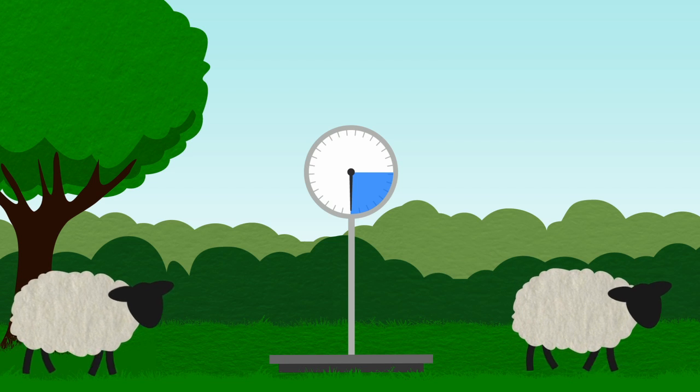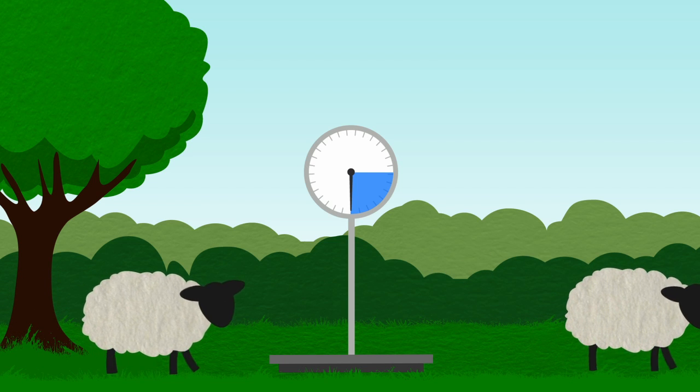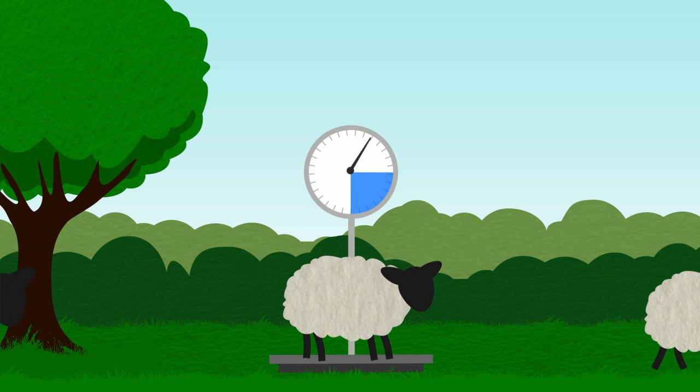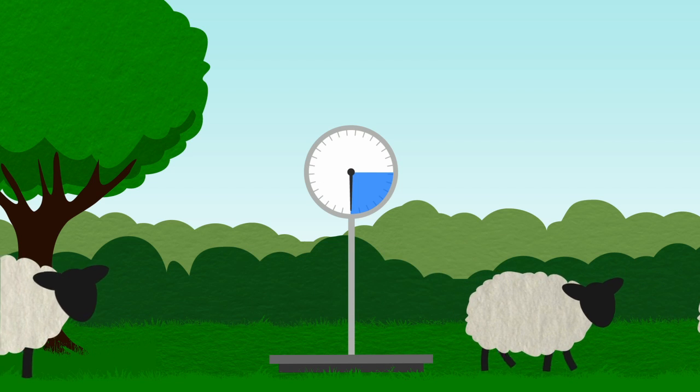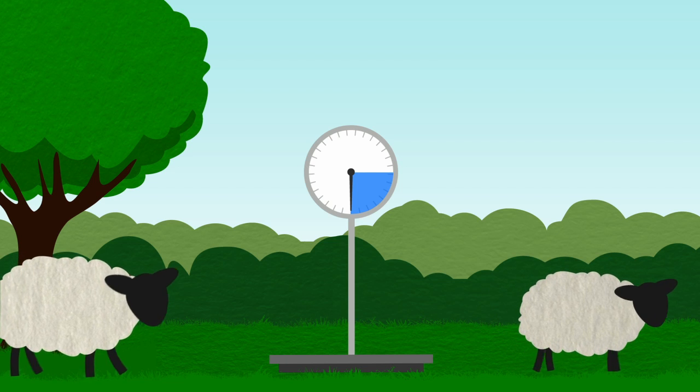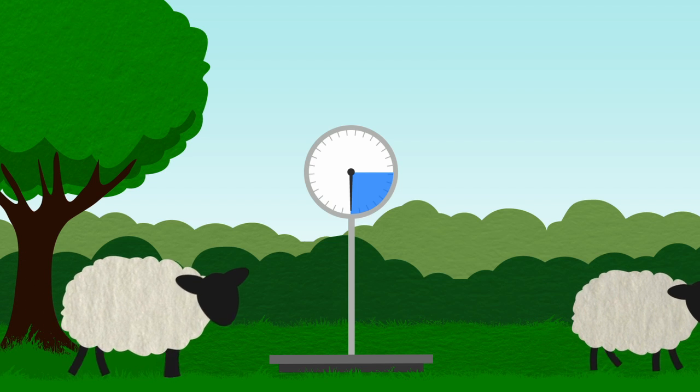Our lambs all grow at different rates but we only consider them ready when they reach the right weight. This may take several months on their more natural diet of grasses, herbs, clovers and wildflowers.